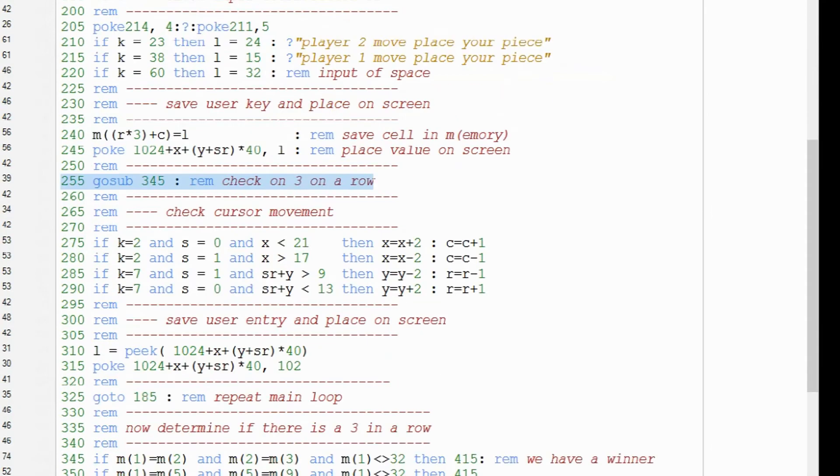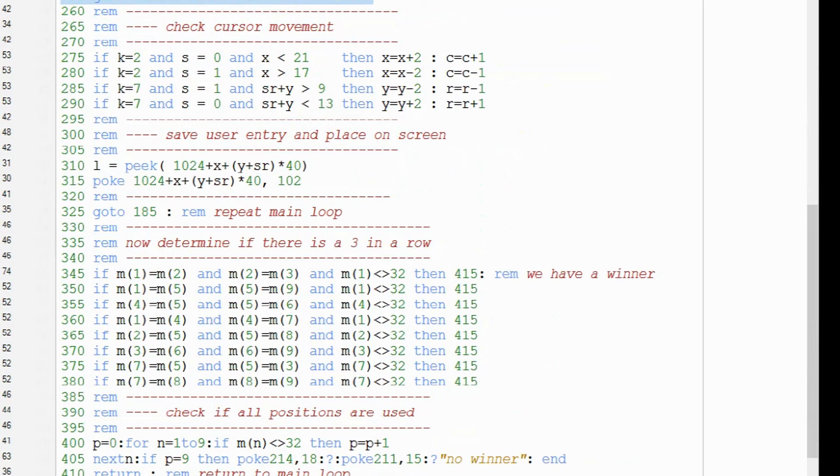Now we have the input and placed it on the screen, we need to validate if that was a winning position for one of the players. We do that by jumping to the validation part of code by using a gosub. After a gosub we can return to the main loop and continue the game.